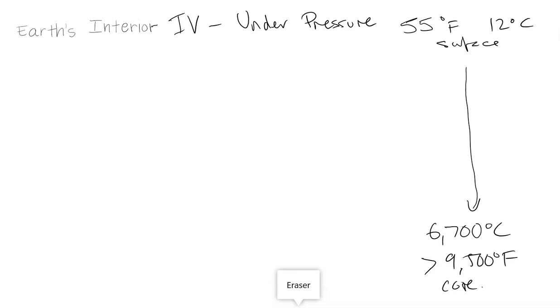Now, we know that from the Bowen's reaction series, where Bowen looked at the melting points of different minerals, and when they crystallize and come out of the melt. So in terms of Bowen's reaction series, the hottest temperature where we found that all of the minerals became liquid or melt is around 1,200 degrees Celsius.